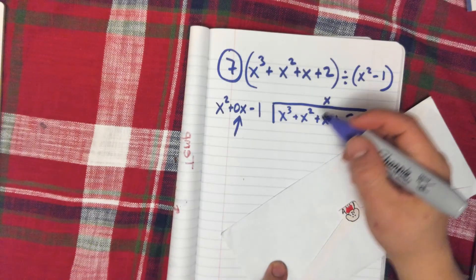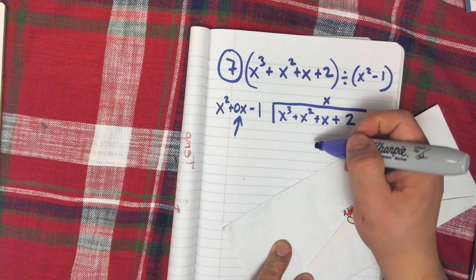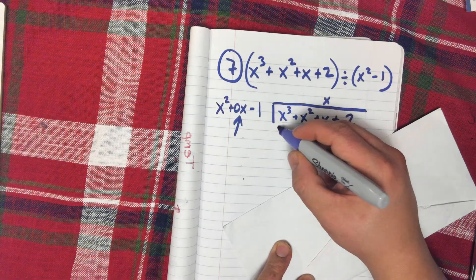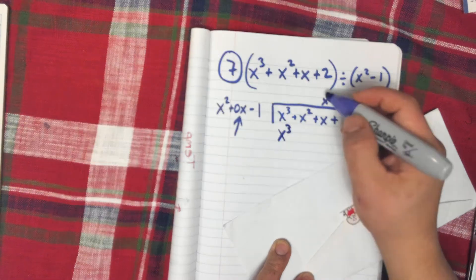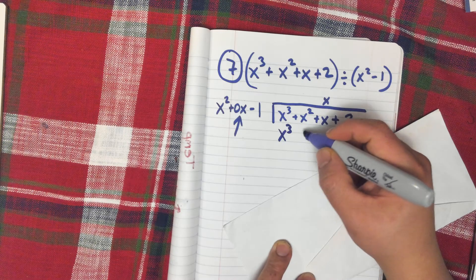So what multiplies times x squared to get to x cubed? Well, x. So x times x squared is going to be x cubed. x times 0x is going to be 0x squared.